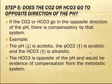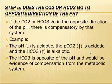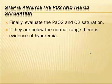On step five, determine if the carbon dioxide or bicarbonate goes in the opposite direction of the pH — if so, there is compensation by that system. For example, if the pH is acidotic (less than 7.35), the pCO2 is acidotic (more than 45 mmHg), and the bicarbonate is alkalotic (more than 26 mEq/L), the bicarbonate is moving opposite to the pH, indicating compensation from the metabolic system or kidneys.